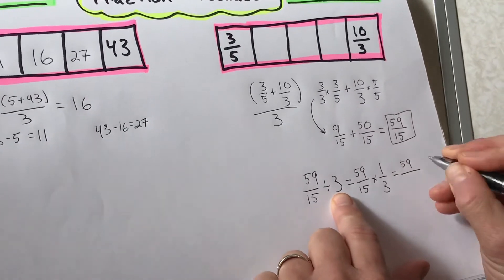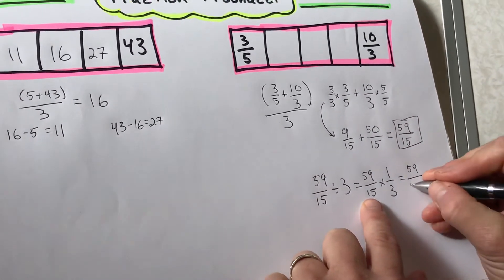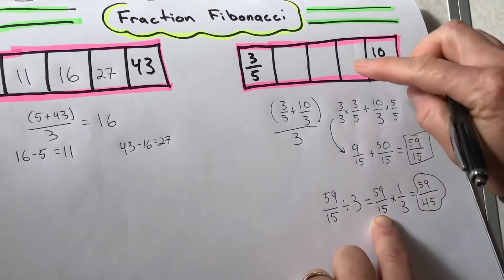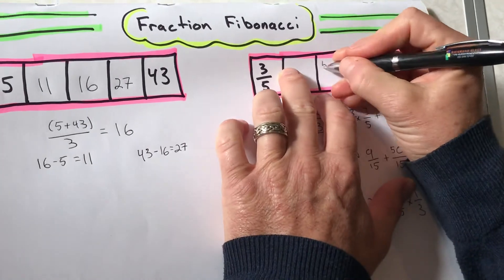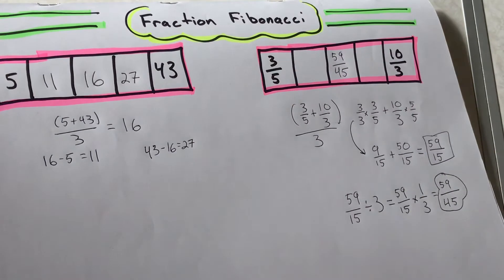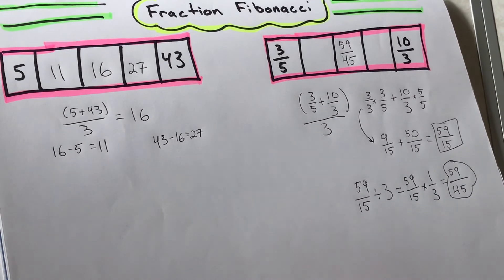And I get 59 over 45. 59 over 45. So that is gonna be my middle number. It's not pretty, but I'm just gonna write it in there. 59 over 45. Okay, let's pause that for now.